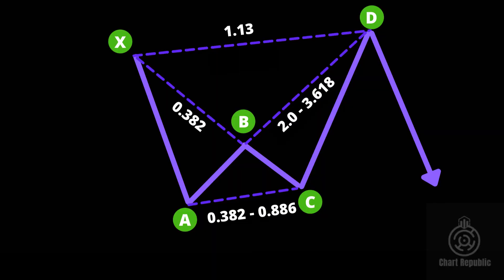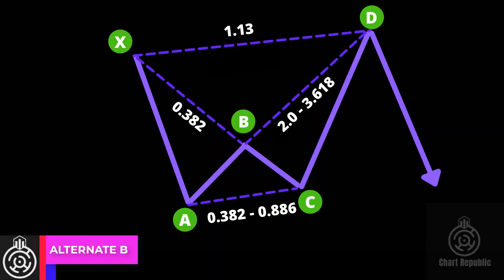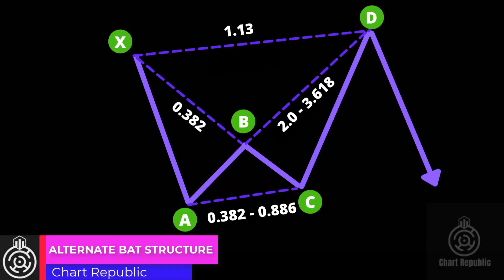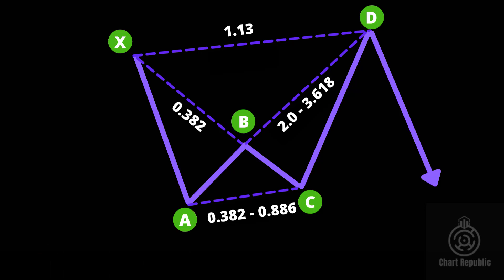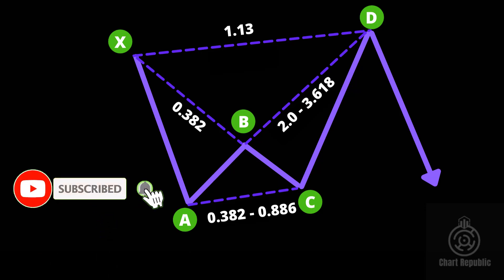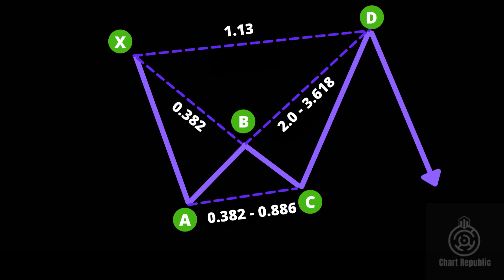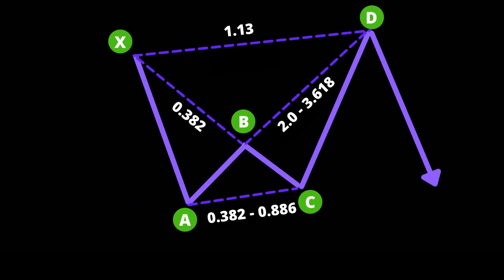Another variation of the bat pattern is called the alternate bat, which is slightly different than a standard bat in terms of the Fibonacci relationships between its legs. In this picture, you can see these proportions. Unlike the previous example, I chose a bearish pattern to show that bullish and bearish harmonic patterns use the same Fibonacci ratios.